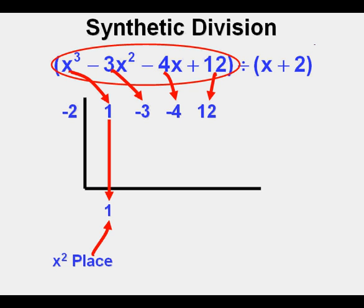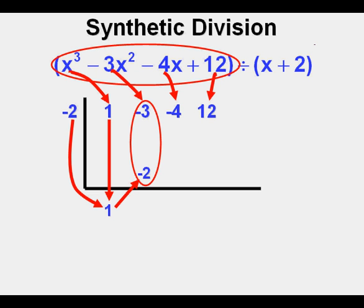The next thing we do is bring down the leading coefficient of x cubed straight down to the x squared place. Then we take the negative 2 here and multiply it by the 1 at the bottom. The product of those two numbers, negative 2, goes here within the frame at the bottom. Then we take the sum of these two numbers, negative 2 and negative 3, which is negative 5, and place it here below in what is the x term place.